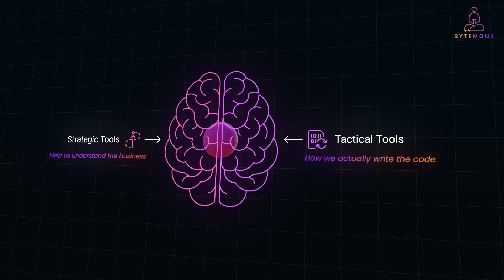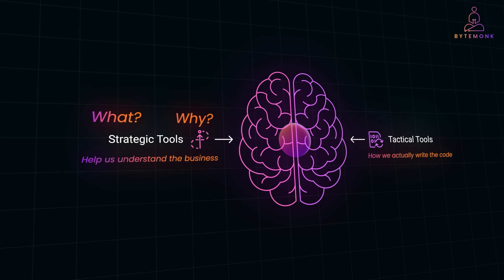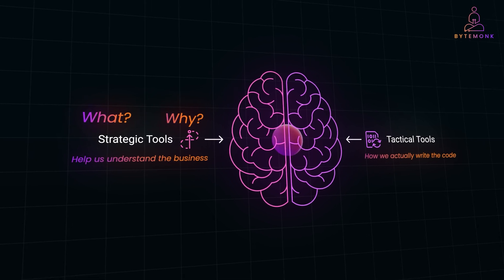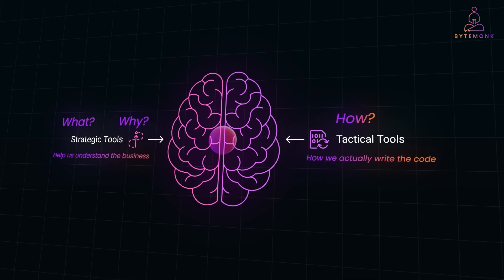So, the strategic aspect of DDD deals with answering the questions of what and why. What software we are building, and why are we building it? The tactical part is all about how. How each component is implemented.